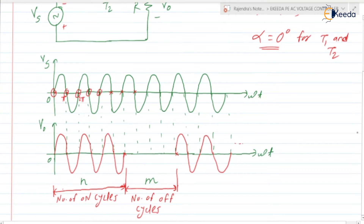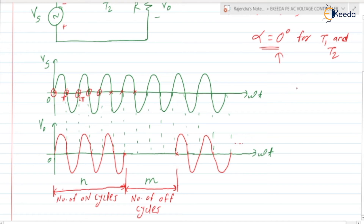What we are doing is passing n number of cycles, where n is the number of on cycles. For the first n cycles, we are triggering thyristors T1 and T2 with alpha equal to zero. Next, for the next m cycles, after passing the first n cycles, we are not turning on thyristors T1 and T2 — meaning we are not going to apply the gate signals to T1 and T2 for the next m cycles. After that again we pass the next n cycles, then again block the next m cycles.